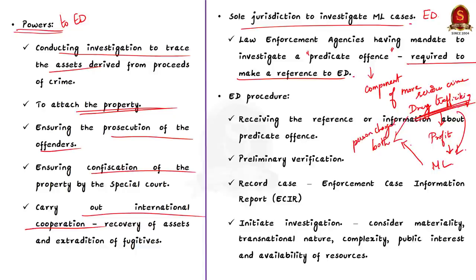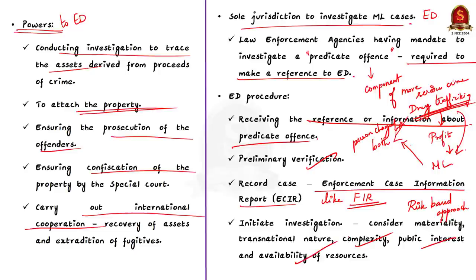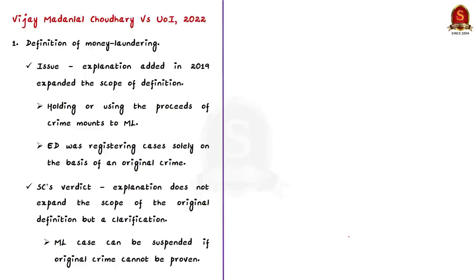When the ED receives the reference or information about a predicate offense, then it makes a preliminary verification. After this, a case is recorded by the ED and it initiates investigation. The record is called Enforcement Case Information Report or ECIR. It's like an FIR. During investigation, ED follows a risk-based approach and takes into consideration factors such as materiality of offense, transnational nature of the crime, complexity of the case, the larger public interest and availability of resources. I hope you got a basic understanding of money laundering and the functions of Enforcement Directorate. Now let us come to the verdict.